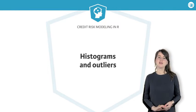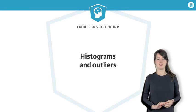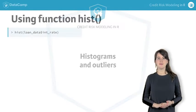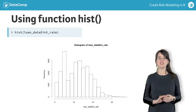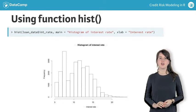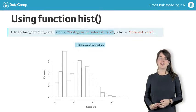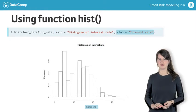Now, let's look at some continuous variables using histograms and plots. For a basic histogram, you call function hist with a variable of interest, in this case, interest rate. You can use the arguments main and xlab for nicer labels.